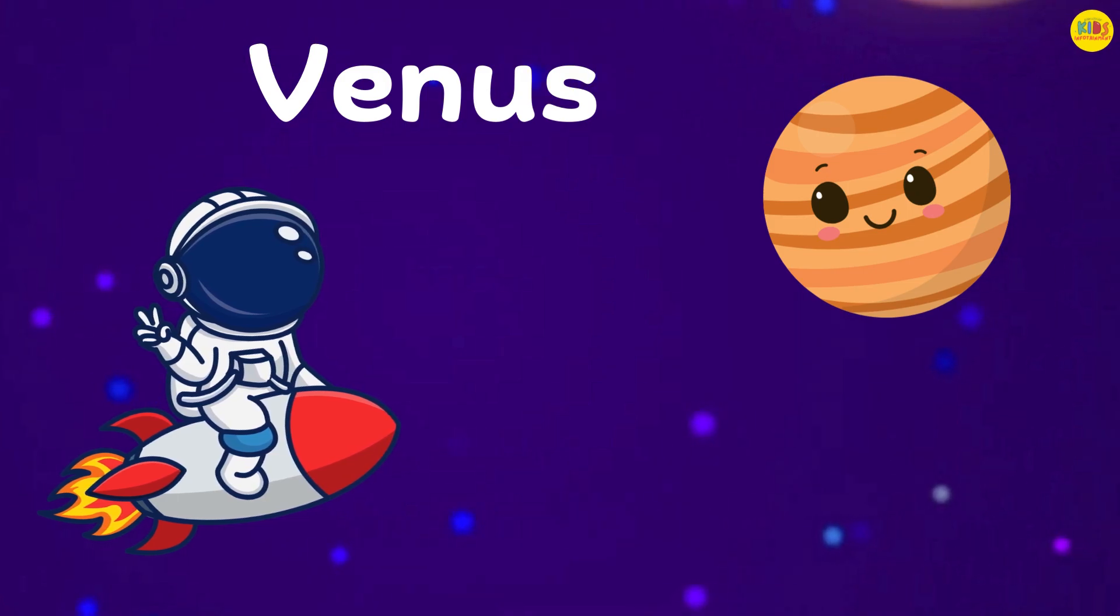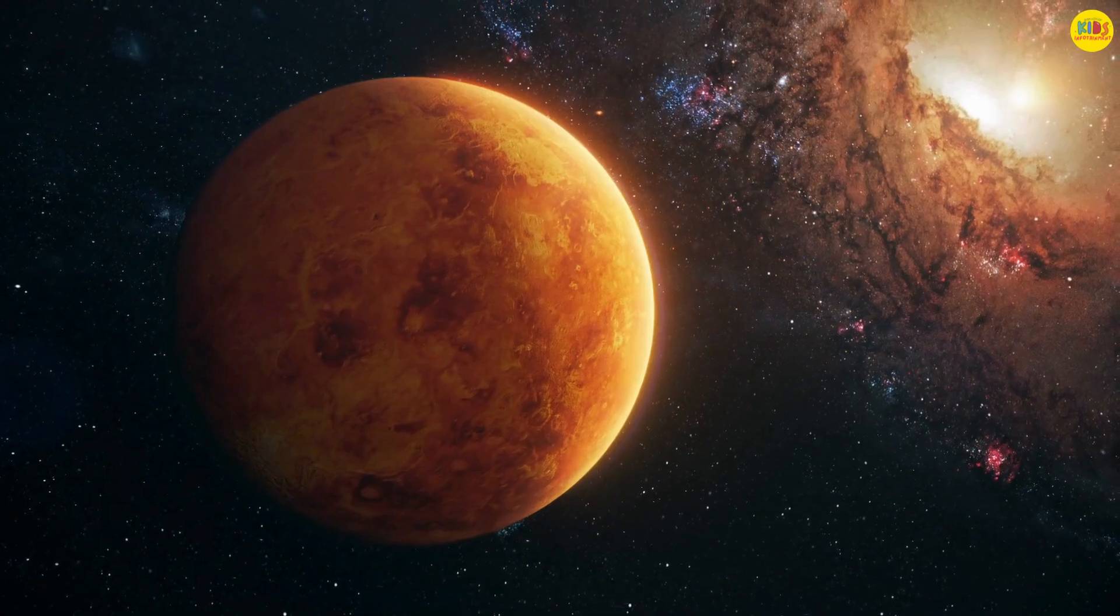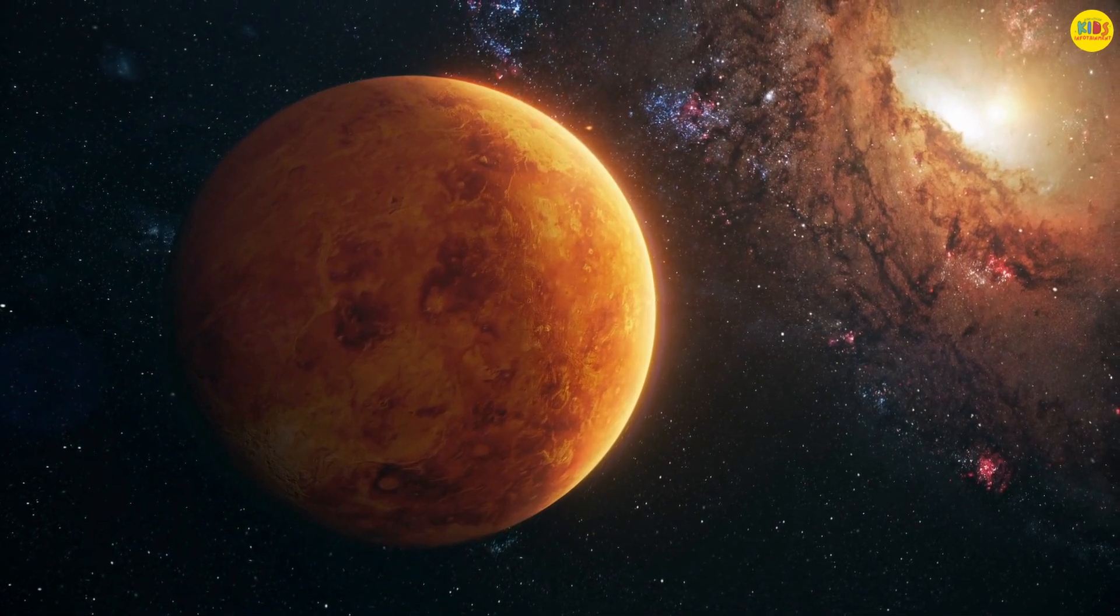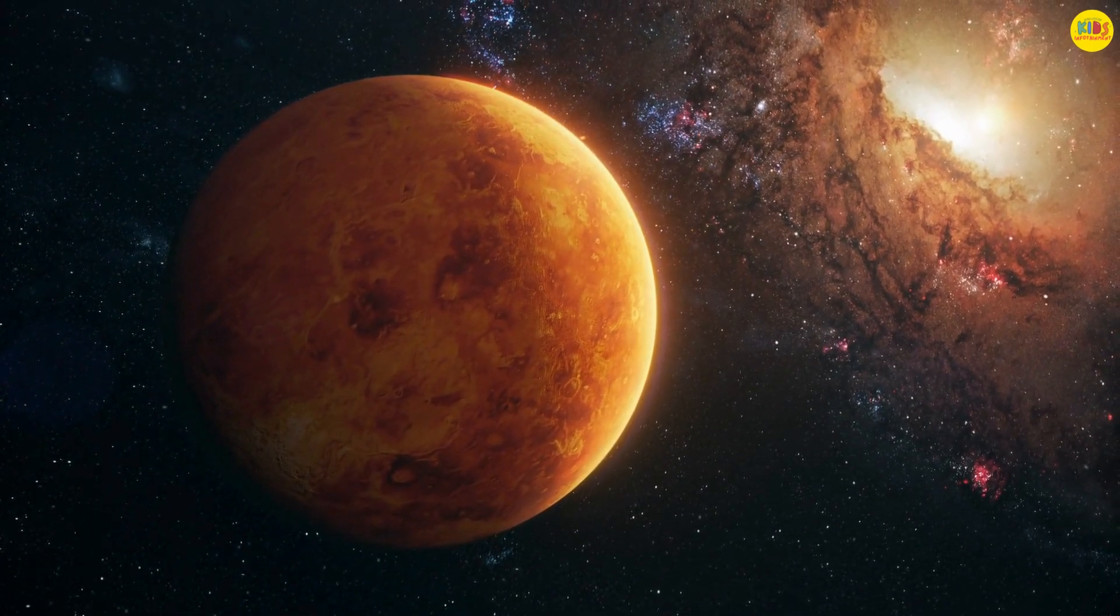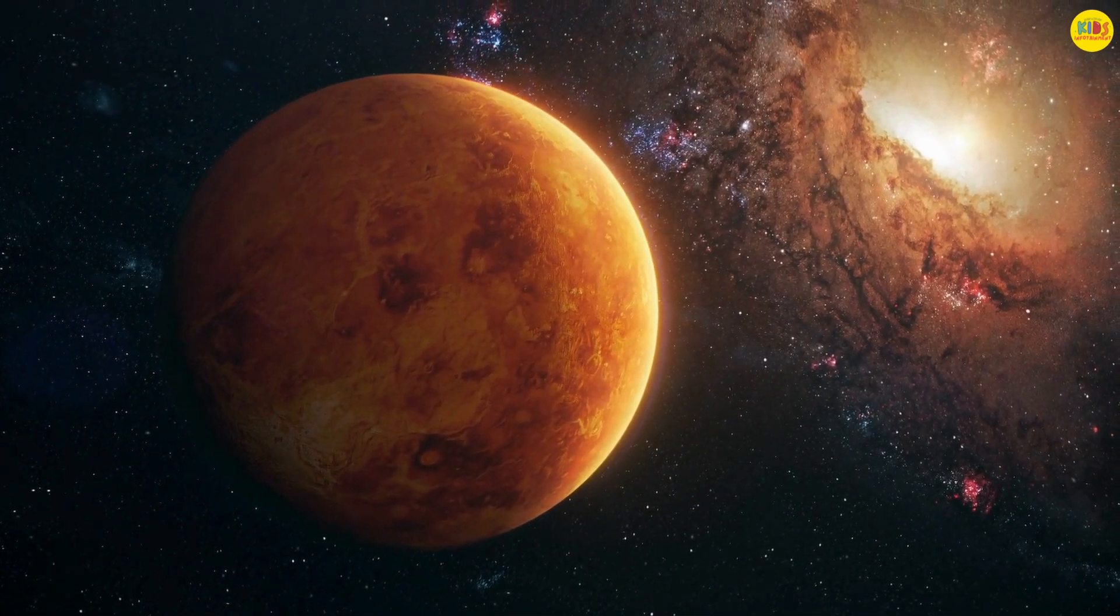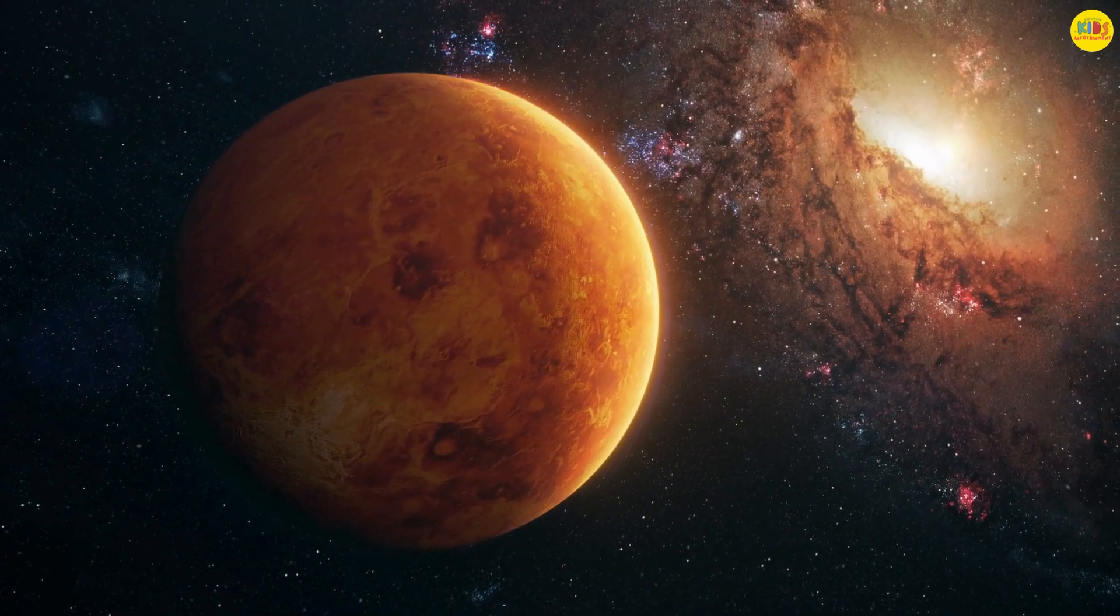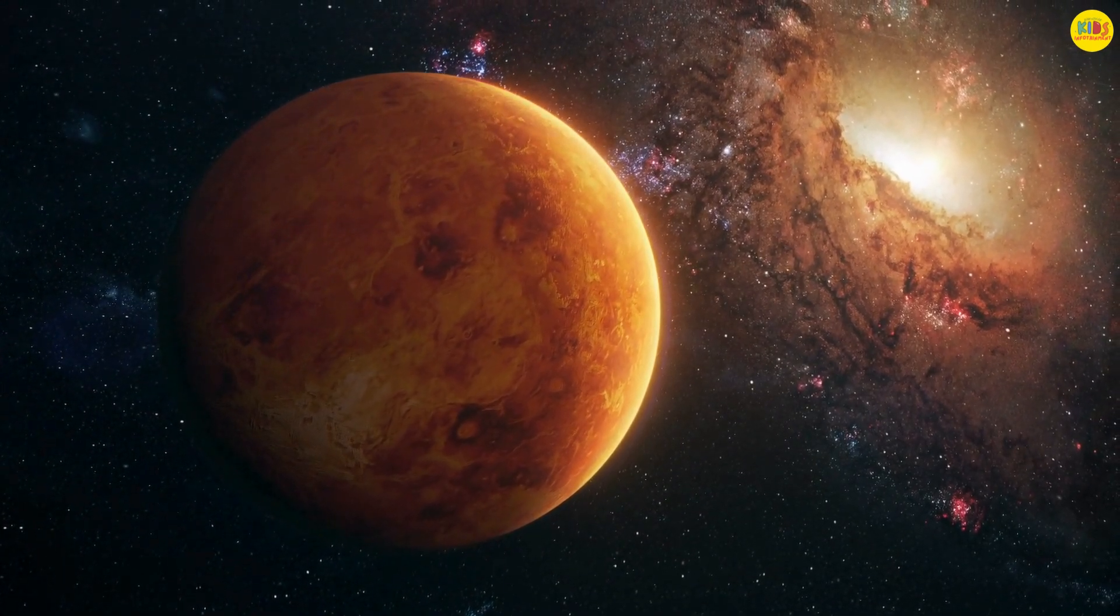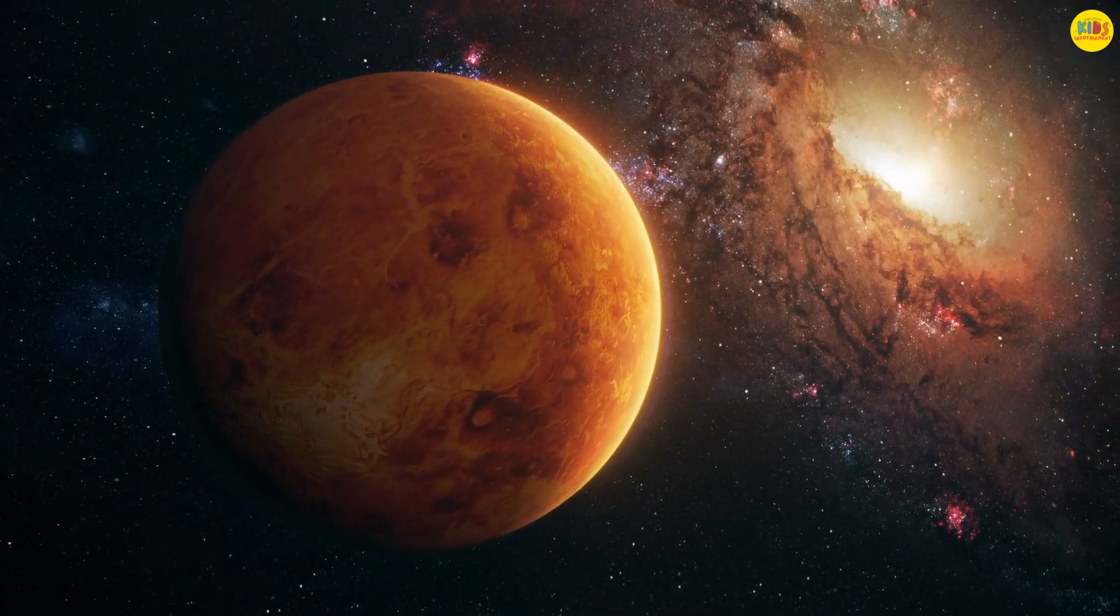Next stop is Venus. Venus is the hottest planet in our solar system. It's covered in thick clouds that trap heat. People sometimes call Venus Earth's sister because they're similar in size, but trust me, you wouldn't want to live there. It's way too hot.